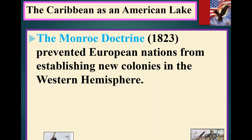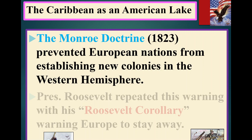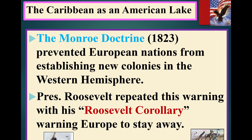The Monroe Doctrine is important because it has to do with hemispheric security — America wants to keep European powers out of the region. The Monroe Doctrine is passed in 1823 to prevent European nations from establishing new colonies in the Western Hemisphere. President Roosevelt then sets forward the Roosevelt Corollary to the Monroe Doctrine, saying the United States will stop any country that tries to interfere in Latin America. America realizes it has the largest military in the Western Hemisphere and will prevent Europe from creating colonies they could leverage against American strength.